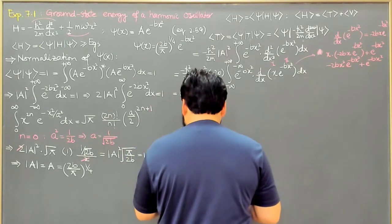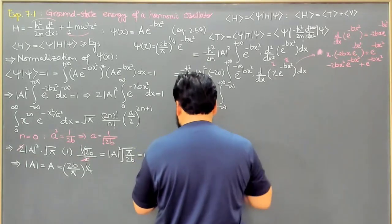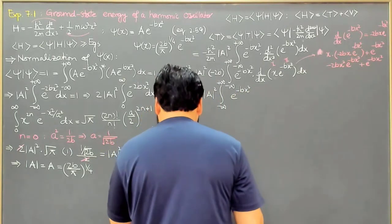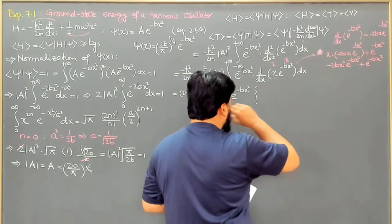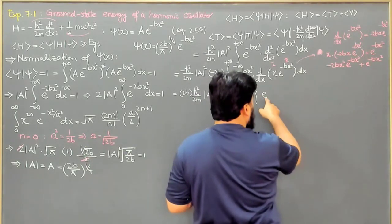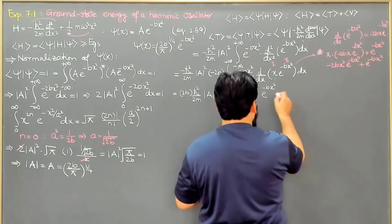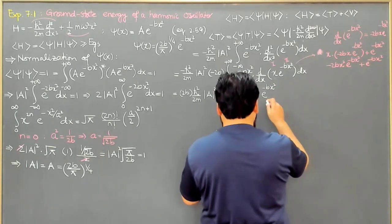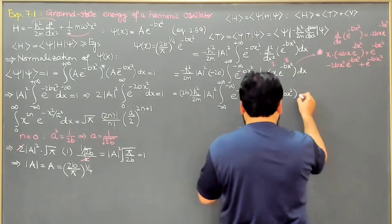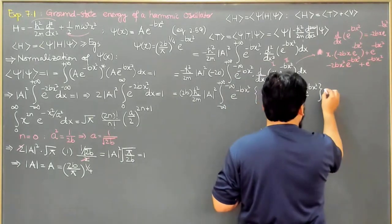And then this one from minus infinity to plus infinity, and e^(minus bx²). If I take this one common, then what remains — because for d/dx I will have to put this thing — I have written this one, and then e^(minus bx²), and here is minus bx², and minus 2bx², plus e^(minus bx²). So it is this term, and dx.